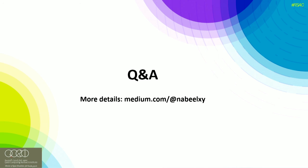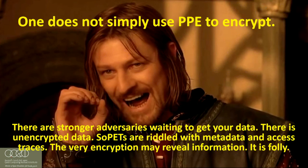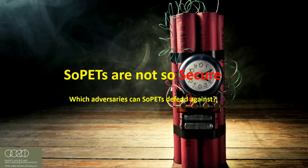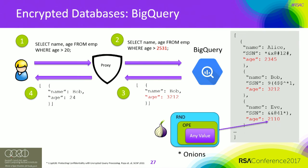Q: Going back to the slide with the encrypted SQL query — what stops someone from creating a glorified rainbow table for all possible search strings to find matches? A: They would need the key to create those queries. Without the key they can't do it. Even if you tried brute force with a large list of combinations, order-preserving encryption typically has a very large domain, which makes the rainbow table very large as well, making such an attack much harder. Q: Fair enough, thanks.